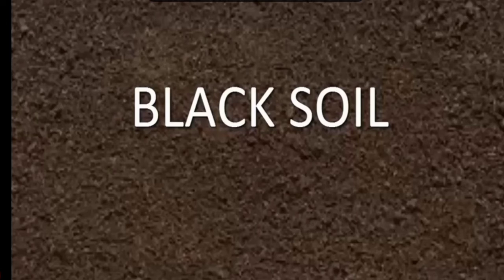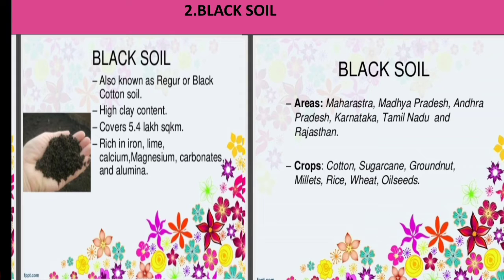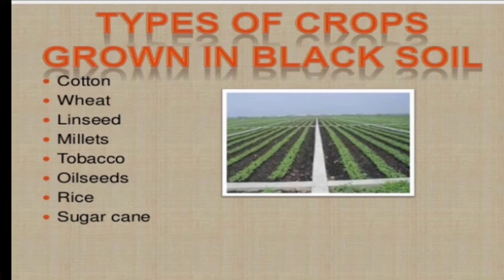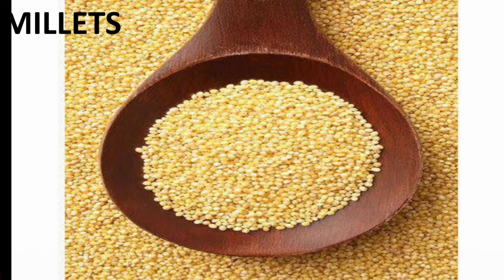Black soil is formed by the weathering of igneous rocks — the primary rocks. It is mostly clayey in nature. Major crops grown in black soil are cotton, sugarcane, groundnut, millets, and linseed.